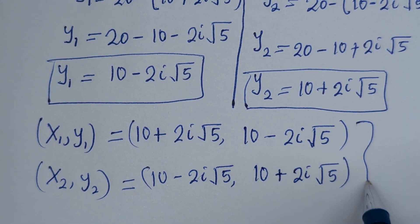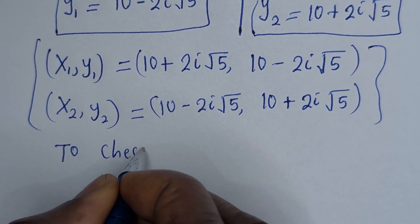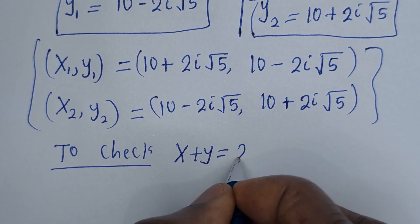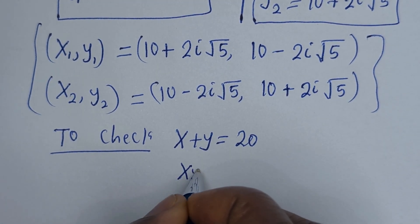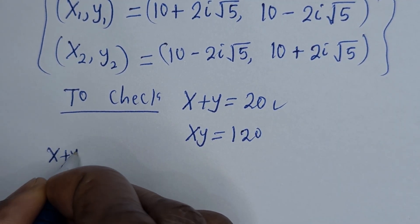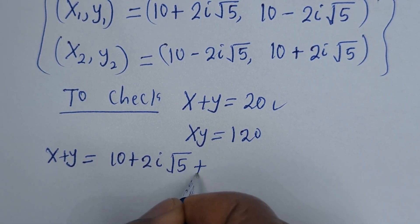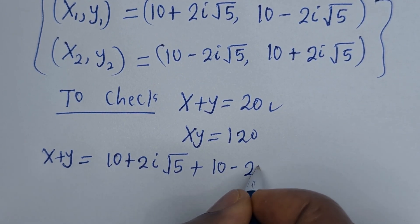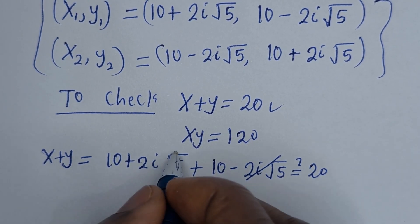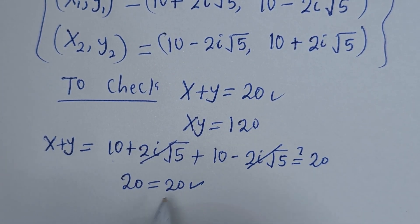We need to check to confirm if this answer is right or wrong. We have the given equations: x plus y equals 20, and xy equals 120. Let us consider x plus y: (10 plus 2i root 5) plus (10 minus 2i root 5). The imaginary terms cancel, leaving 10 plus 10, which is 20 — equal to 20. This is true.